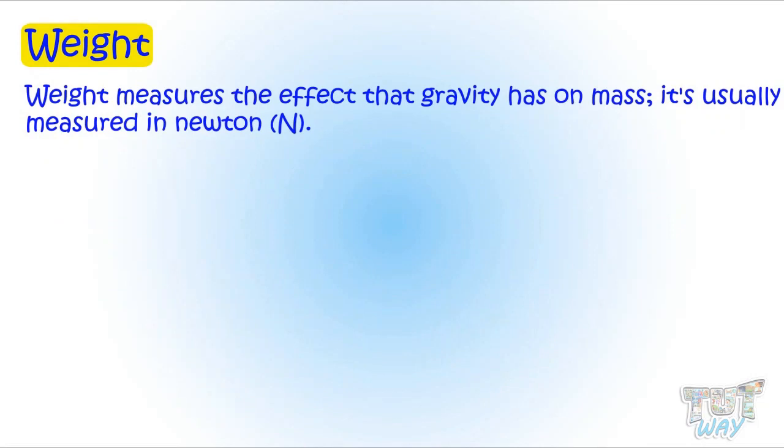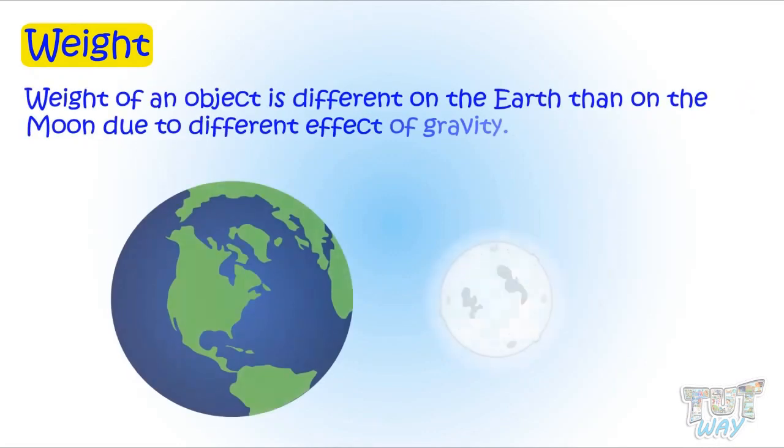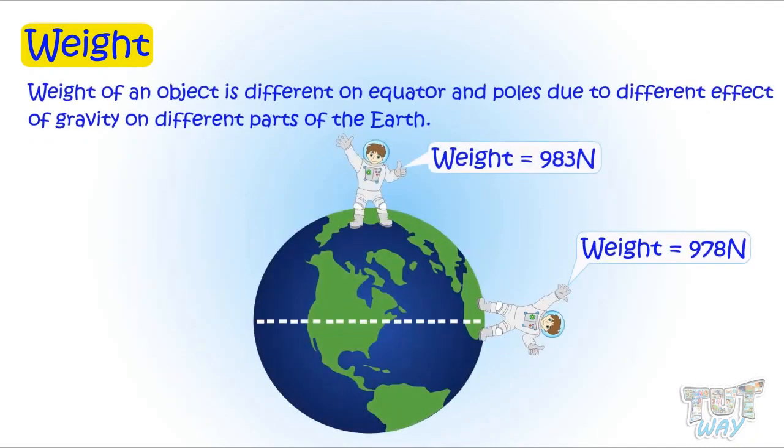Now let's learn about another property, which is weight. Weight measures the effect that gravity has on mass. It's usually measured in Newton. Weight of an object is different on earth than on the moon due to different effect of gravity. Weight of an object is different on the equator and poles due to different effect of gravity on different parts of earth.